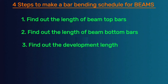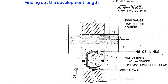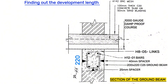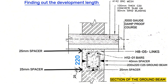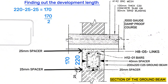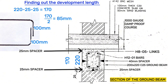Step three is to find out the development length for both bottom bars and top bars. Going back to the section of the ground beam, it shows a depth of 220 millimeters. Deduct 25 millimeters concrete cover at the bottom and 25 millimeters on top to remain with 170 millimeters. Dividing by two gives 85 millimeters for each development length — top and bottom. However, since we want the top and bottom development lengths to overlap, we round up to 100 millimeters each side so that they will overlap. The development length on each side is therefore 100 millimeters.